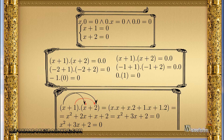Let's multiply the two first-degree equations we saw. We have x plus 1 equals 0 and x plus 2 equals 0. Multiplying them gives the factor (x plus 1) times (x plus 2) equal to 0.